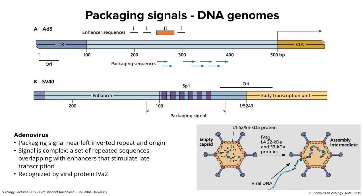For adenovirus packaging: in the nucleus, an empty capsid is first assembled, then viral DNA (also made in the nucleus) has its packaging signal bind viral protein IVa2, which in ways still not fully understood gets the DNA into the capsid. Only DNA with that packaging sequence gets into the capsid — that's why cellular DNAs are excluded for both SV40 and adenovirus. If you cut out the packaging sequence without damaging anything else, those DNAs would probably replicate but wouldn't be packaged into particles, so you wouldn't make infectious virus.